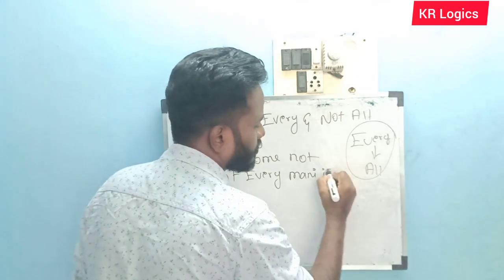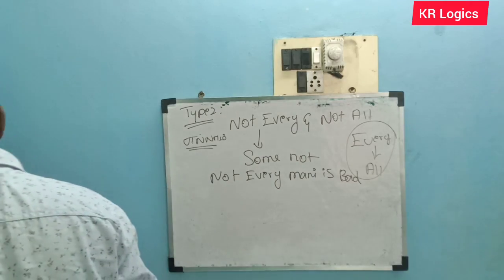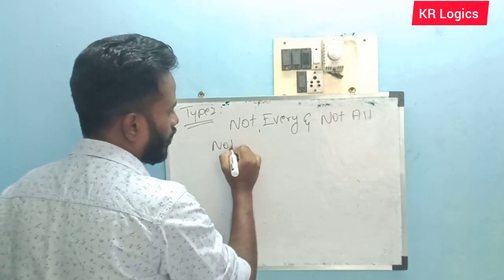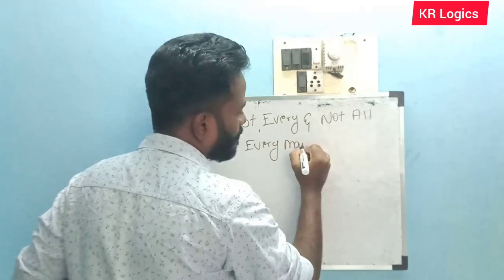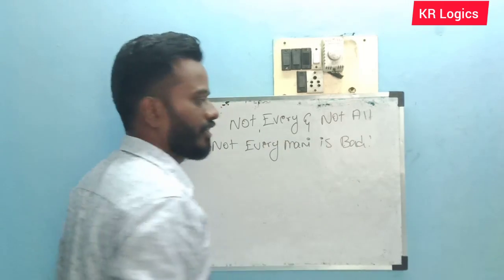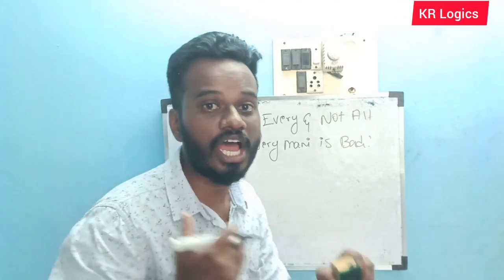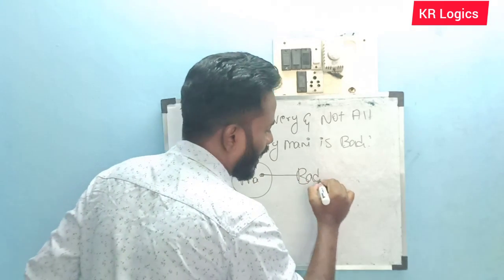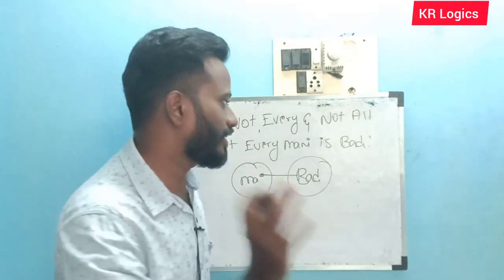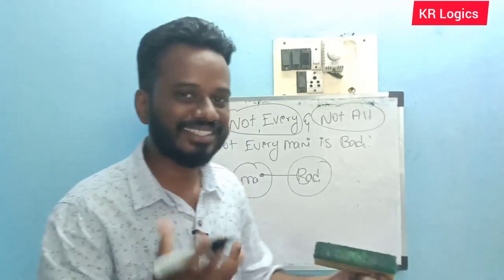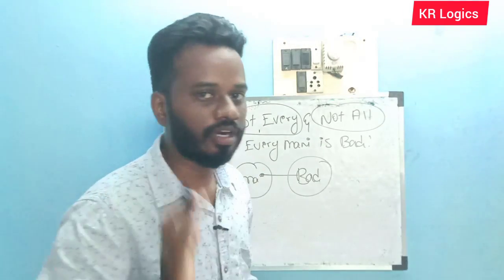For example: 'Not every money is bad.' 'Not all money is bad.' Not every, not all — 'money is bad.' That's not all — we have a clear idea that's nothing but 'some not.' If there is another type, there is another 'not' type.